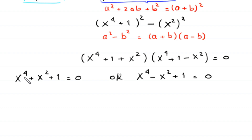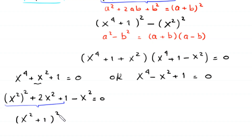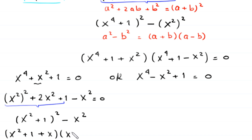First we solve x⁴ plus x² plus 1 equals 0. We write x⁴ as (x²)², then rewrite x² plus 1 minus x² as 2x² plus 1 minus x², giving (x²)² plus 2x² plus 1 minus x² equals 0. Using the identity a² plus 2ab plus b² equals (a plus b)², the expression becomes (x² plus 1)² minus x² equals 0. Using difference of squares, this becomes (x² plus 1 plus x)(x² plus 1 minus x) equals 0.